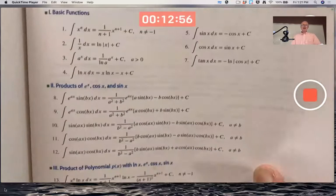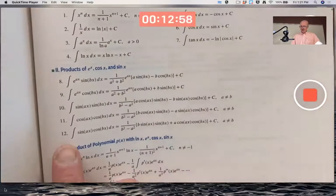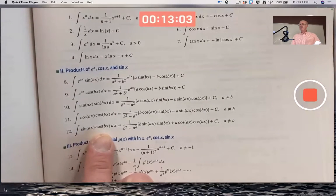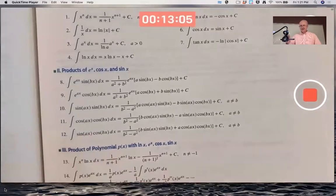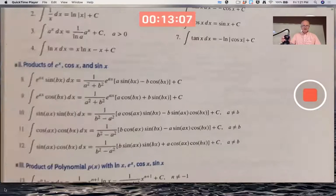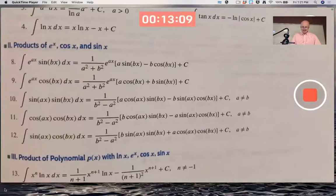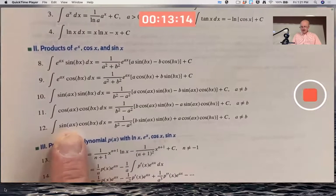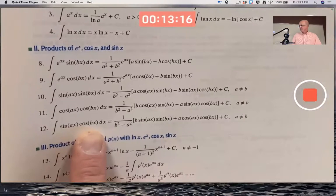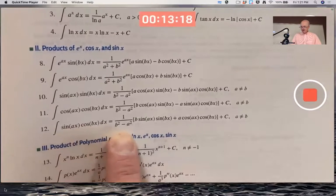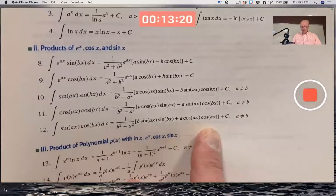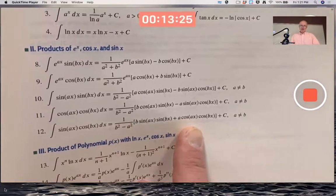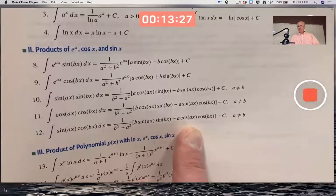And the one that applies here is number 12. Because remember I'm integrating sine of 5x times cosine of 4x. So this is the one that applies. Can you see that big enough? Sine of 5x times cosine of 4x. In other words, a is 5 and b is 4. And so you just plug those numbers in. Plug in a equals 5 and b equals 4 into this to get the answer. Let's see if we get the same answer that I got with integration by parts.